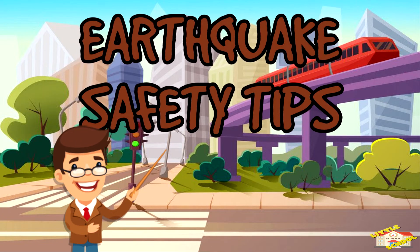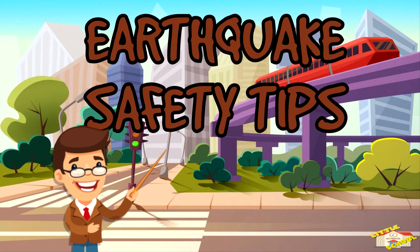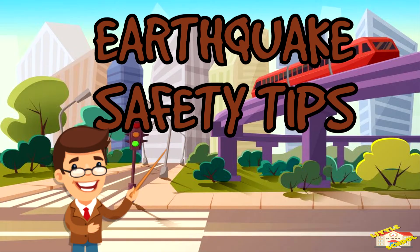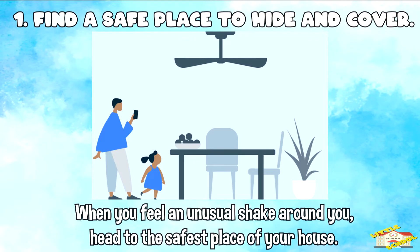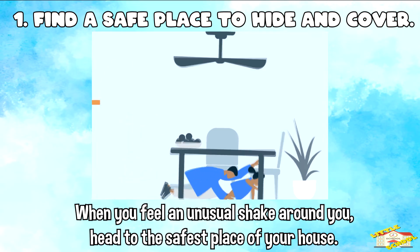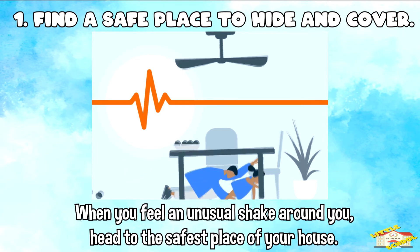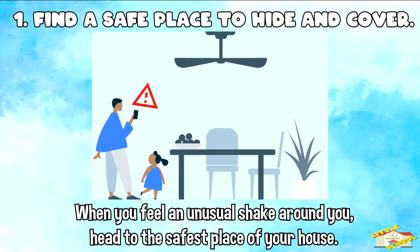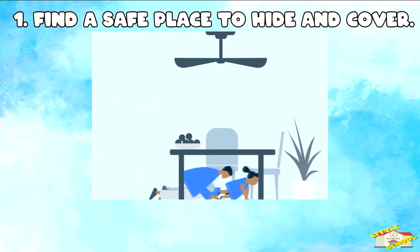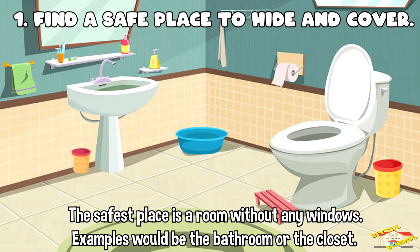Before we wrap up today's lesson, let's go over the safety tips when experiencing an earthquake. When you feel an unusual shake, such as the floor trembling or furniture shaking, it is best that you head to the safest place in your house. The safest place is a room without windows — examples would be the bathroom or the closet.